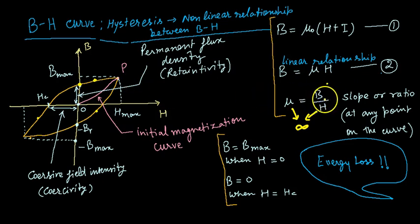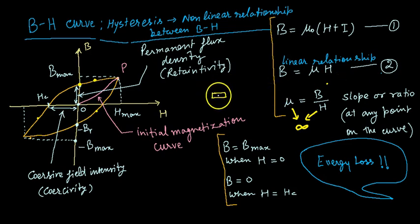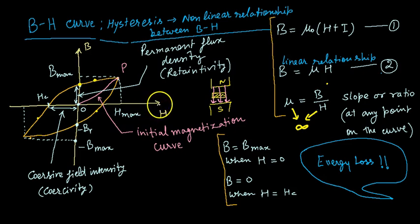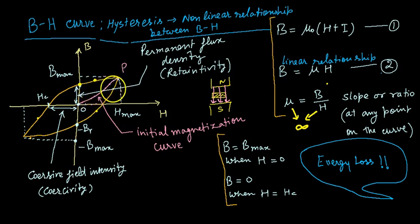To explain the basic concept of the BH curve, suppose we take a magnetic material and place it in an external magnetic field so that field lines pass through it and the material gets magnetized. As we increase the intensity of the external magnetic field H (on the x-axis), the curve rises. Joining all the points gives us the maximum value of external magnetic field intensity.